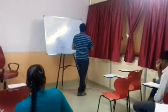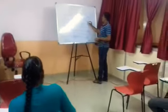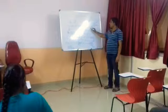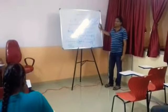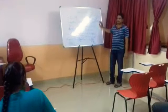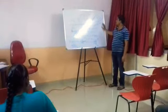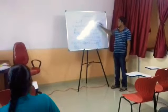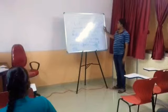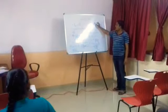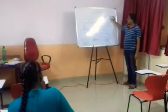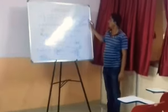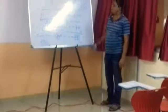Here, small 'a' indicates the element of the matrix. And i and j indicate the position of the element in the matrix.